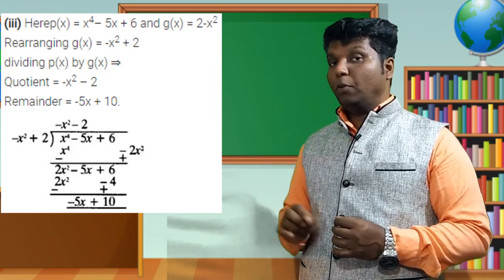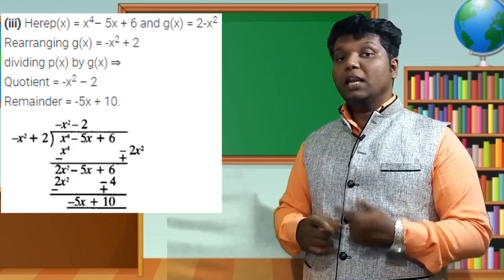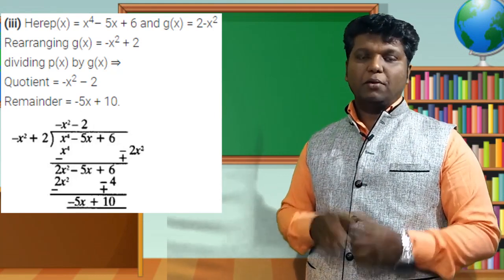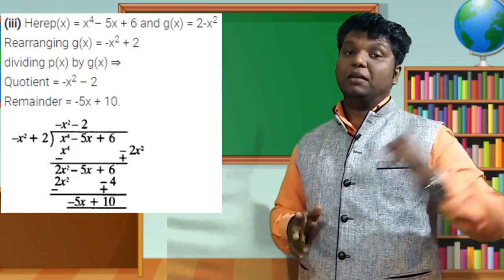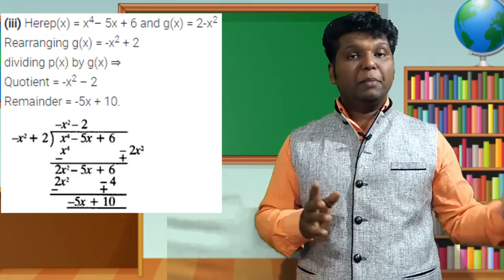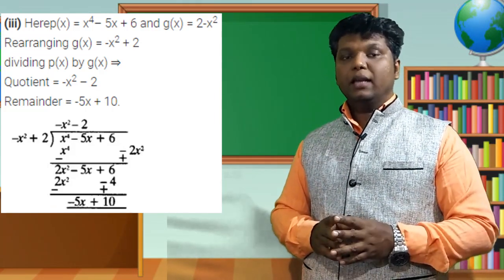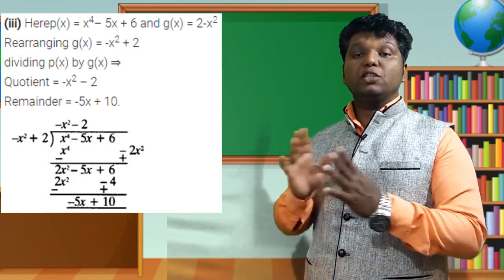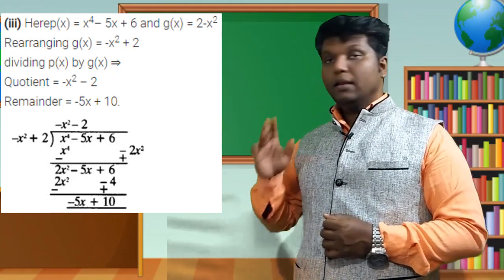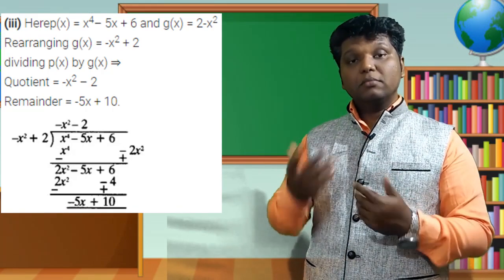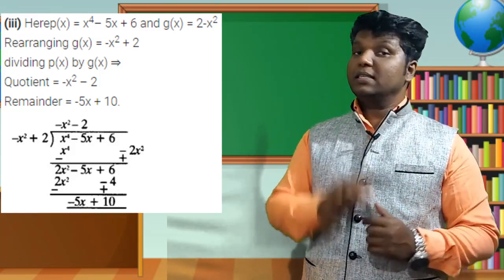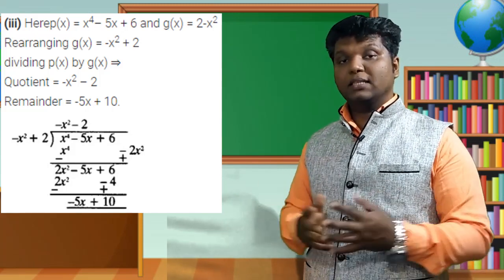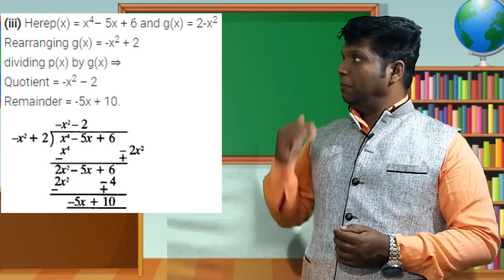Bring down −5x and +6 to get 2x² − 5x + 6. Divide 2x² by −x² to get −2. Place −2 in the quotient. Multiply −2 by the divisor: −2 × (−x²) = +2x², −2 × 0x = 0x, −2 × 2 = −4. Subtract: 2x² cancels, −5x − 0x = −5x; then +6 and −4 remain.